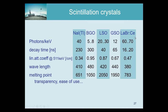Here are a few scintillation crystals — though there are many more — and a few key parameters. One important parameter is the number of photons released per kiloelectron volt. These photons have a few electron volts each, so a thousand electron volts in produces only around 40 photons for sodium iodide. BGO does significantly worse, LSO is about half, GSO a bit worse still, and lanthanum bromide is actually higher than sodium iodide.